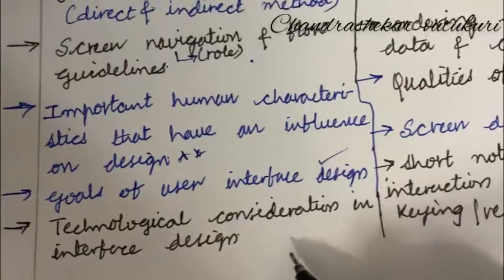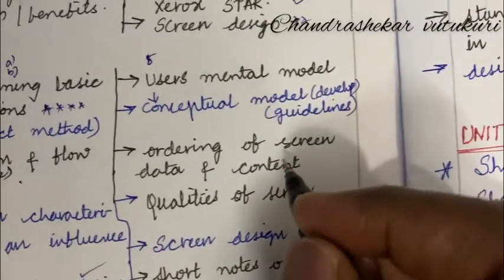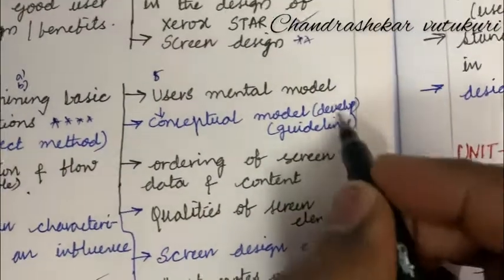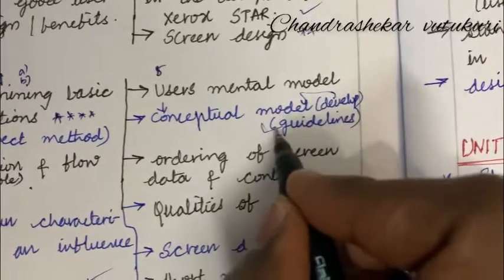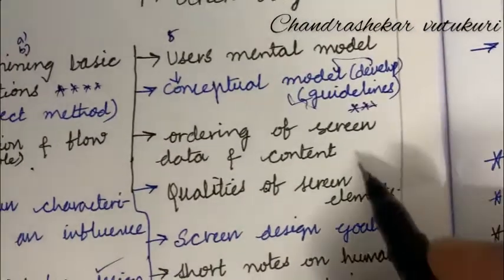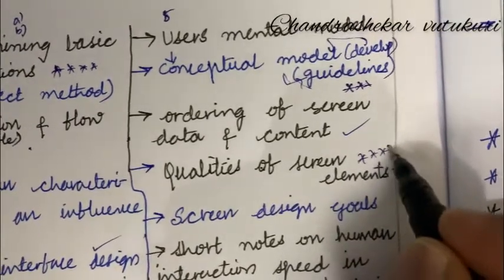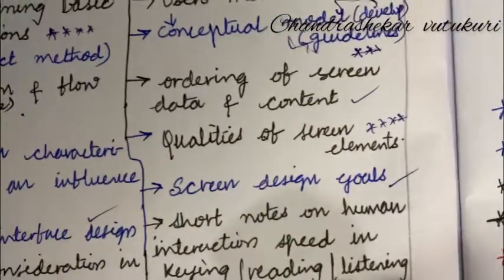Technological considerations in interaction design is also one of the topmost questions which may occur in 4A. User mental model and conceptual model, develop it, as well as guidelines of the conceptual model may be one of the topmost and gunshot questions. Ordering of screen data and content and qualities of screen elements is one of the very important questions. Screen design goals is a short question.